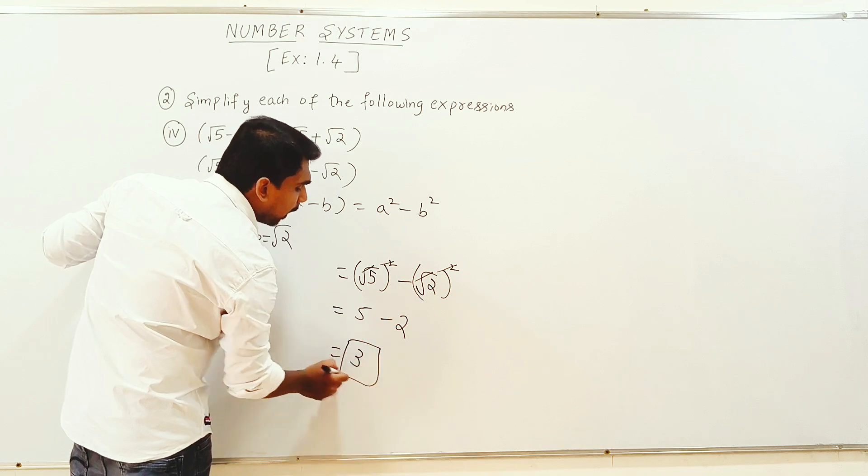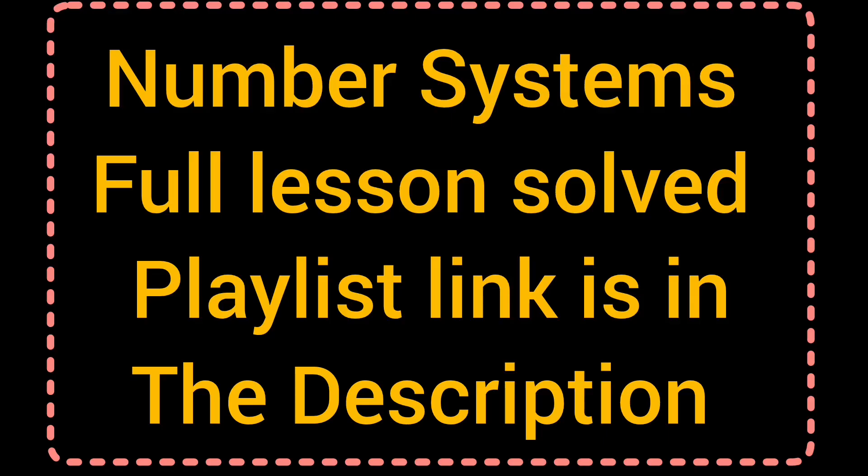2 is minus. 5 minus 2 is 3. Answer is 3. Thank you.